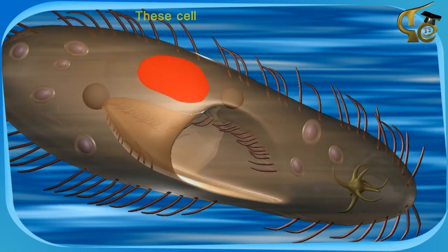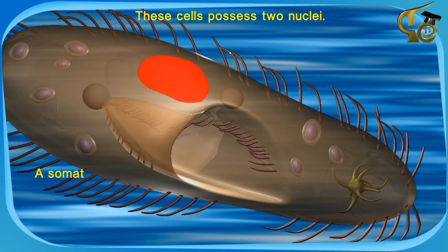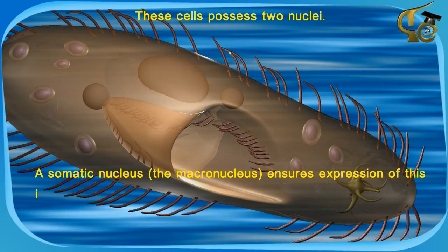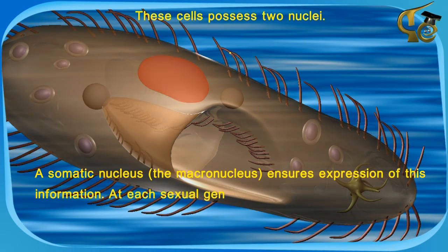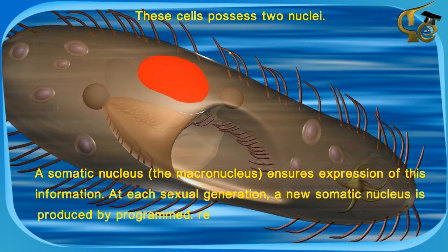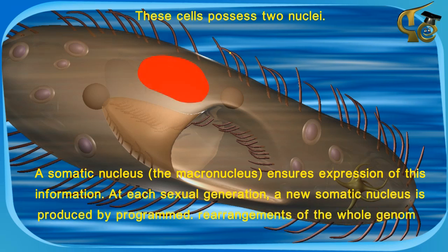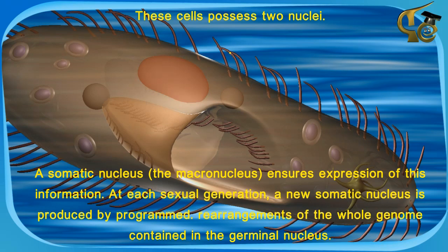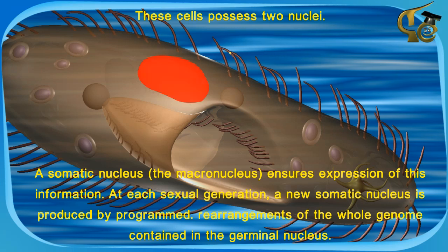These cells possess two nuclei. A somatic nucleus ensures expression of this information. A new somatic nucleus is produced by programmed rearrangement of the whole genome contained in the germinal nucleus.